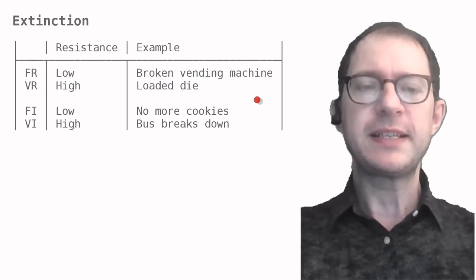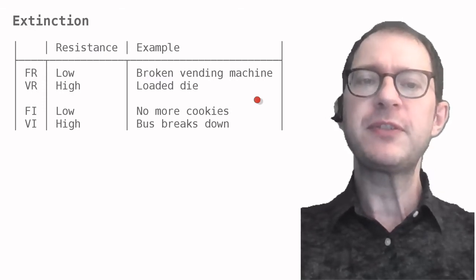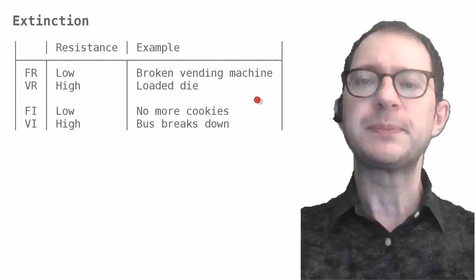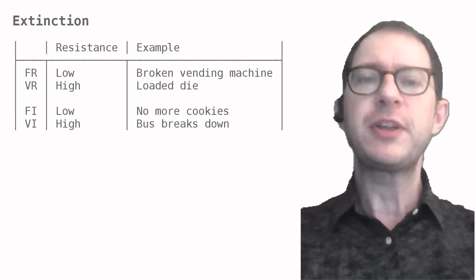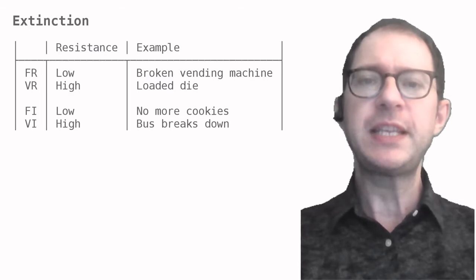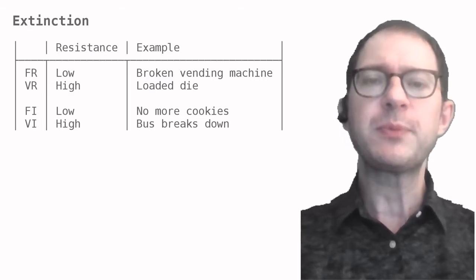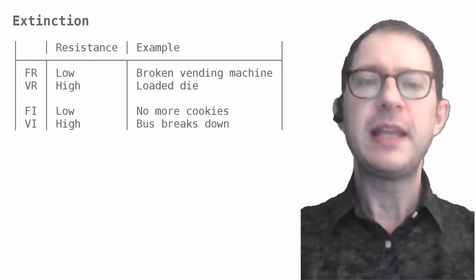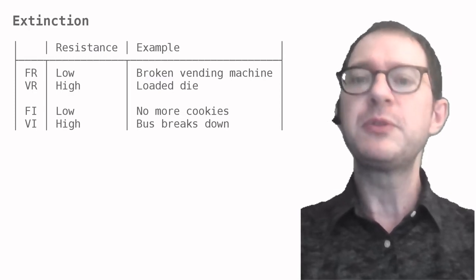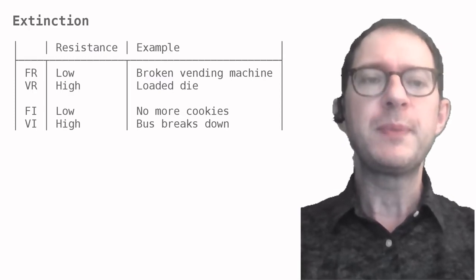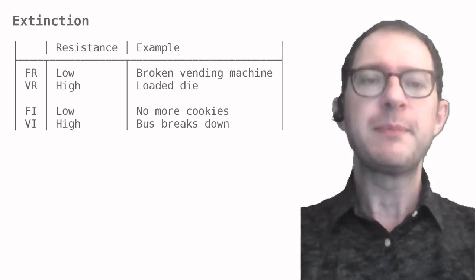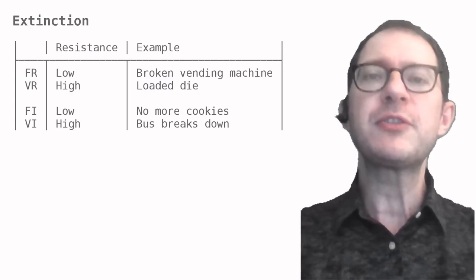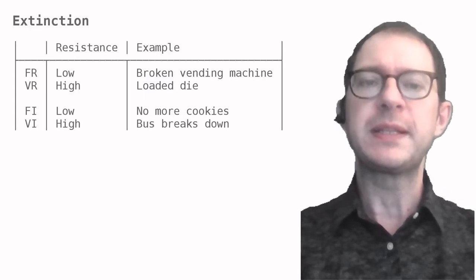The point we want to make here is that behaviors trained under different schedules have different resistance to extinction. We can make sense of this by referring to the example of schedules that we used before. Let's start with fixed ratio schedules, FR. Their resistance to extinction is typically low, meaning that once we stop reinforcing, the behavior stops soon. You can remember this by thinking about our vending machine example. If you put in your four quarters and nothing comes out, do you keep going? Probably not for long. You may try one or two more times if you're hungry, but no more than that. We described this situation by saying that the coin insertion behavior extinguishes quickly when reinforcement is discontinued.